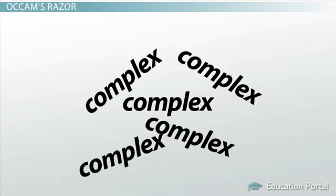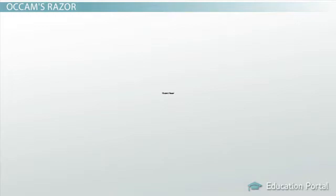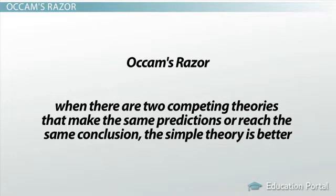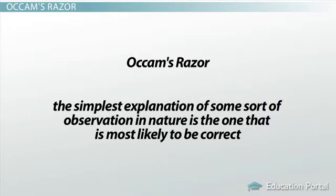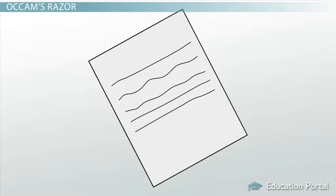Since simple explanations of the same thing are better than complex ones, let me put Occam's Razor another way. In simple terms, Occam's Razor says that when there are two competing theories that make the same predictions or reach the same conclusion, the simpler theory is better. Or, to put it even more simply, the simplest explanation of some observation in nature is the one most likely to be correct. The word 'Razor' is used because we use this principle to shave away extraneous details from an explanation.